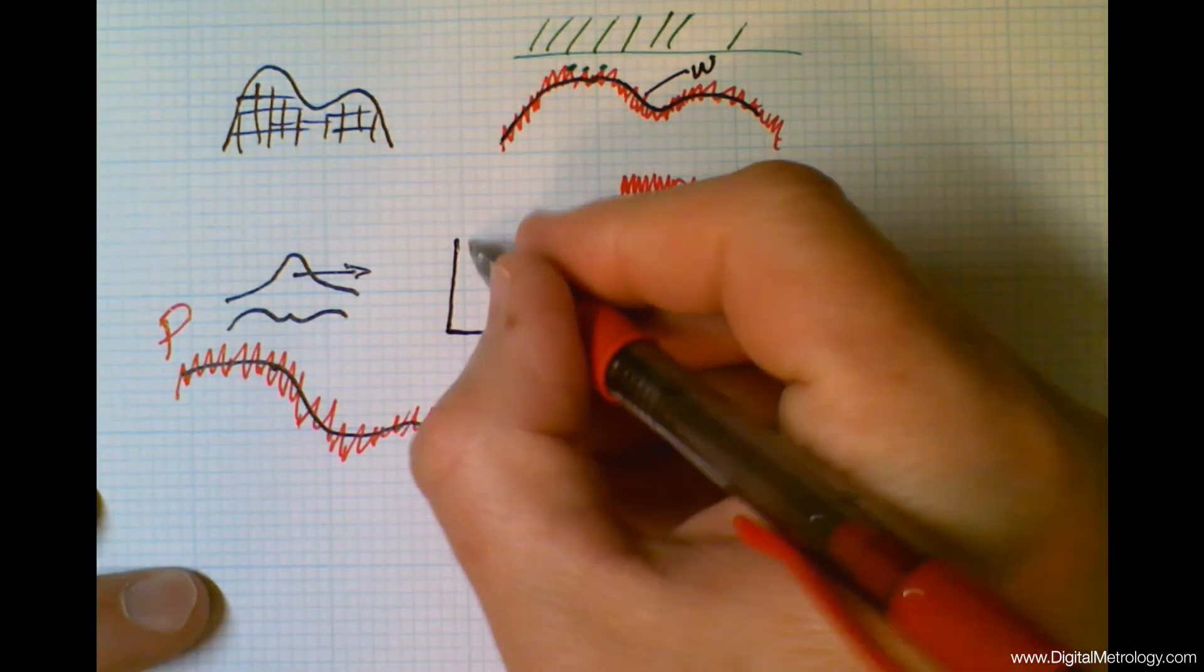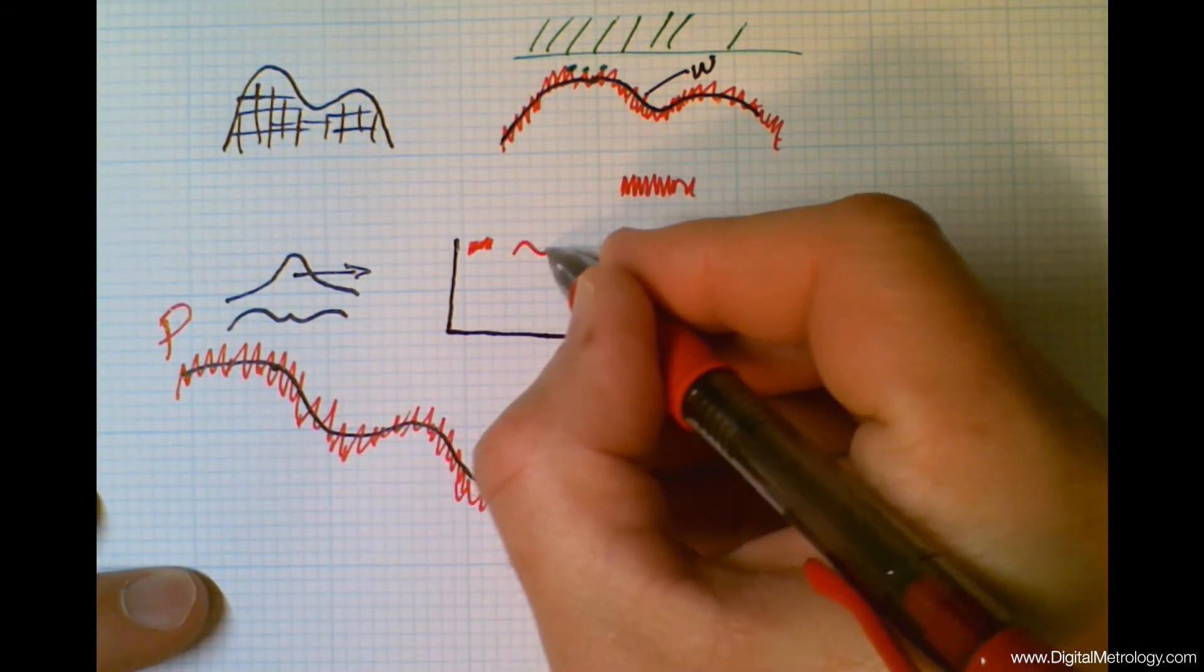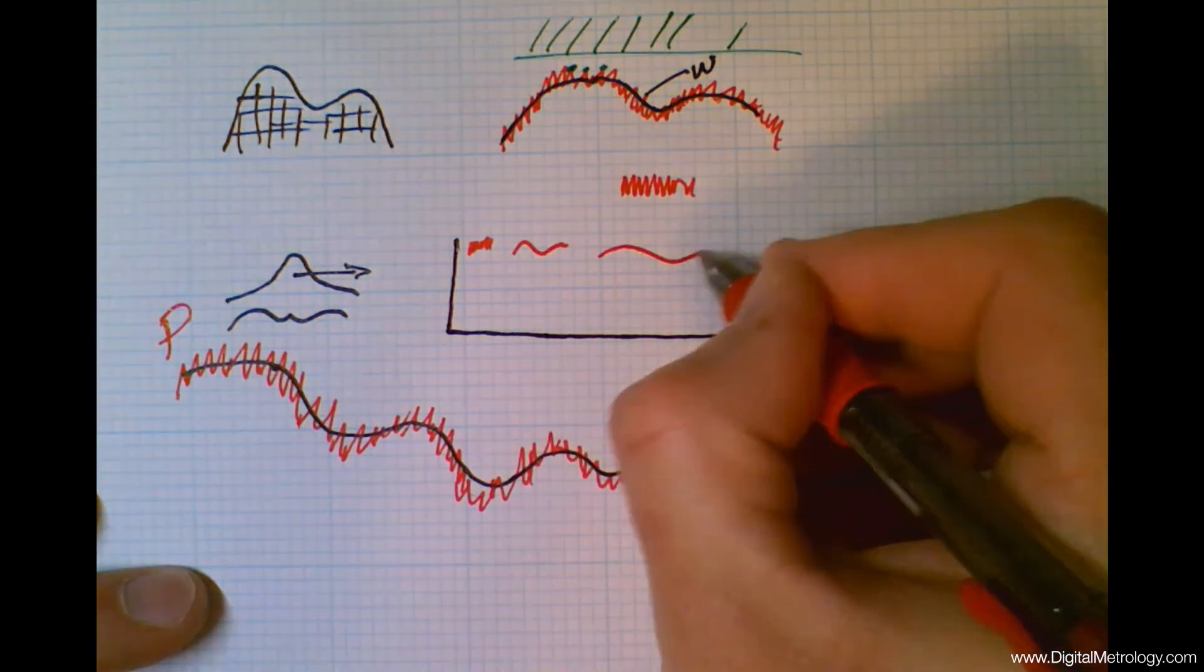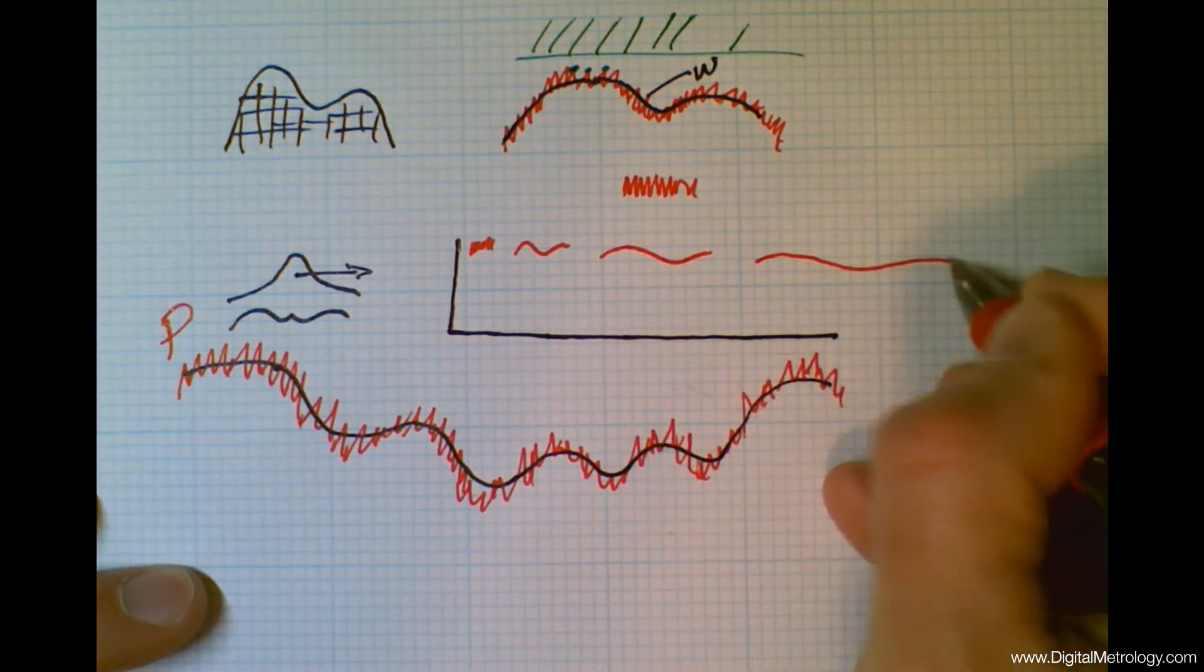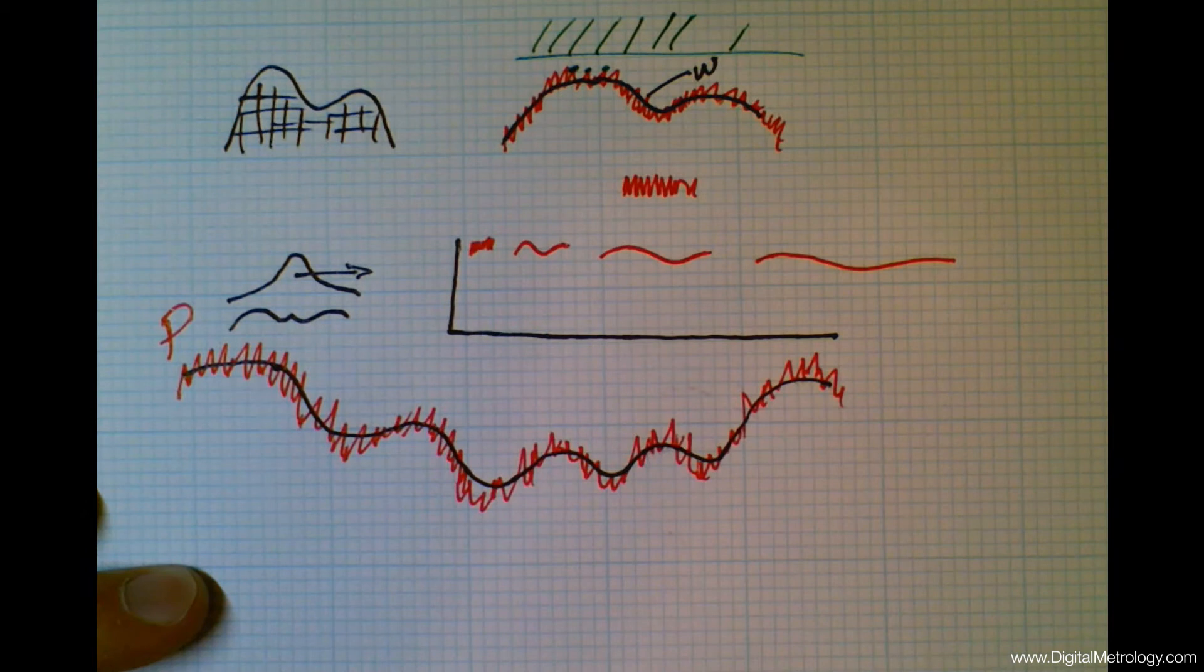This specific width will actually relate to a specific wavelength where waviness begins. So we have a surface that's made up of lots and lots of wavelengths.